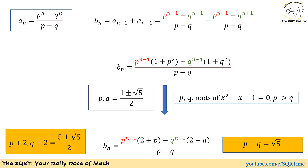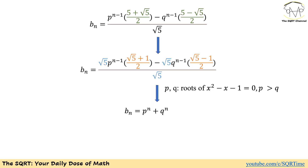We replace these values and simplify. Substituting P plus 2, Q plus 2, and P minus Q equals square root of 5: for P plus 2 we use (5 plus square root of 5) over 2, and for Q plus 2 we use (5 minus square root of 5) over 2. Now we factor out square root of 5 from the two numerator terms. For the first term we get (square root of 5 plus 1) over 2, and for the second term we get (square root of 5 minus 1) over 2.